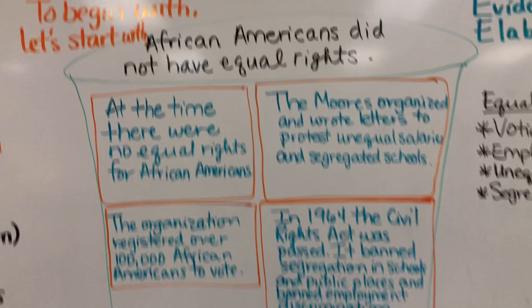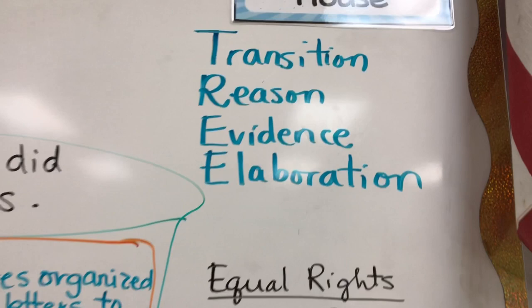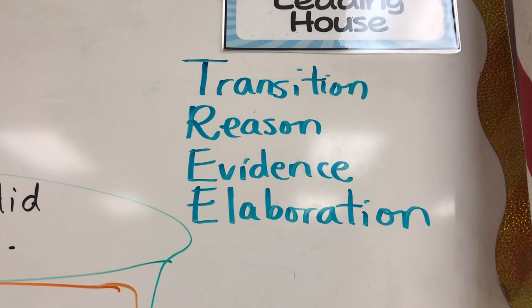I had them think of transitions to start off their reason, and then of course their evidence and elaboration, which can help them form a paragraph. The acronym we use is TREE — Transition, Reason, Evidence, and Elaboration — and we use enough evidence and elaboration to fully explain our reason.